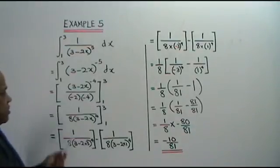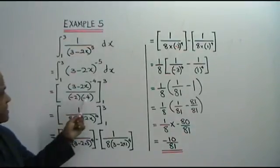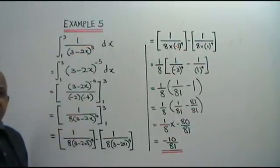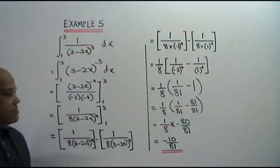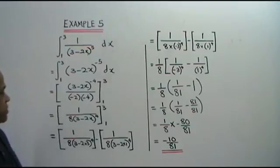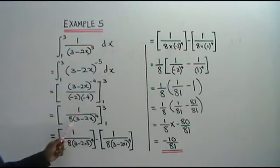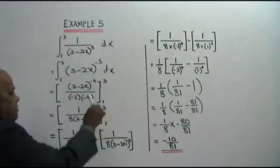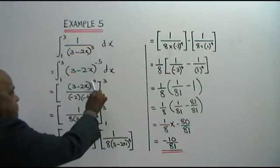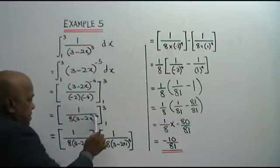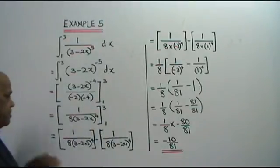Negative times negative is positive. 2 times 4 is 8. We bring this bracket down. Power negative 4 becomes power 4.